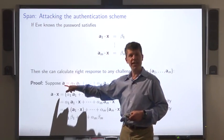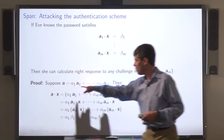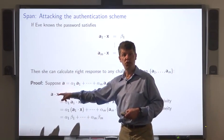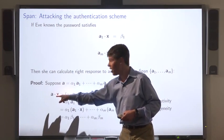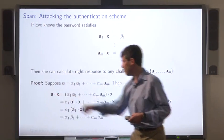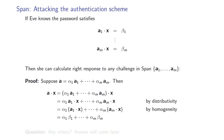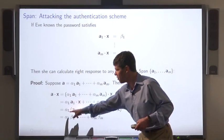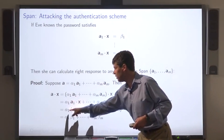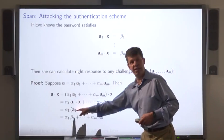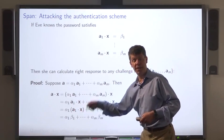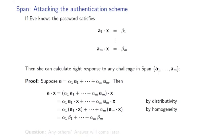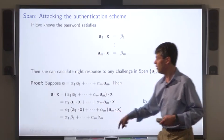Any vector in the span can be represented as a linear combination of the vectors a1 through am. Now we use the distributive law: the dot product of a with the password x, by the distributive law, is the sum of the dot products of these vectors. Then we use another algebraic property to move the alphas out. Eve knows these dot products because she has observed the challenge and the response.